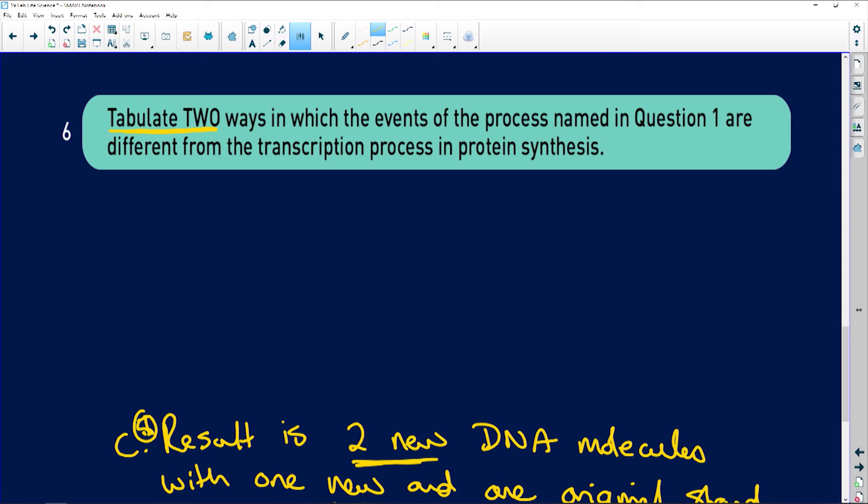Now we're going to tabulate two ways. When they say tabulate, always make sure that you draw a table. They want the process named in question one, which will be DNA replication, and transcription. This is a really nice question.